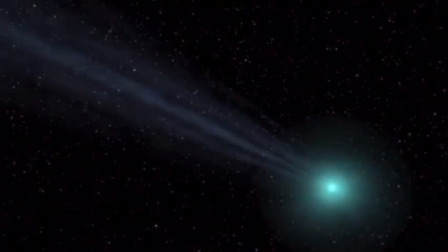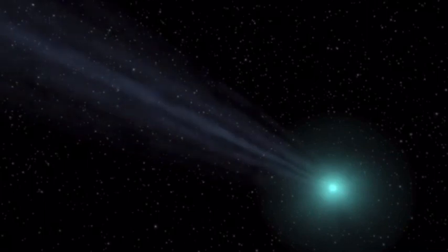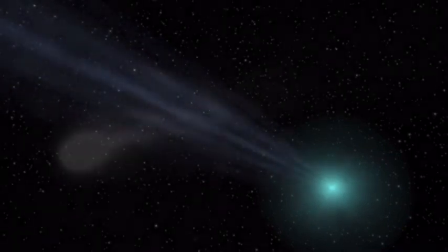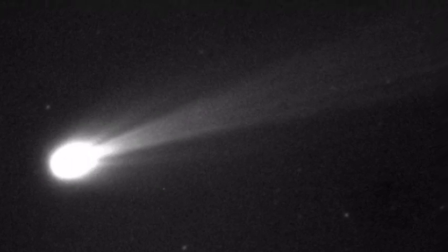Comet Atlas, also known as C/2019 Y4 but nicknamed Atlas as it was discovered by the telescope array system of the same name, was first discovered on March 5, 2019, and stunned the astronomy community as it was heading directly towards the Sun.